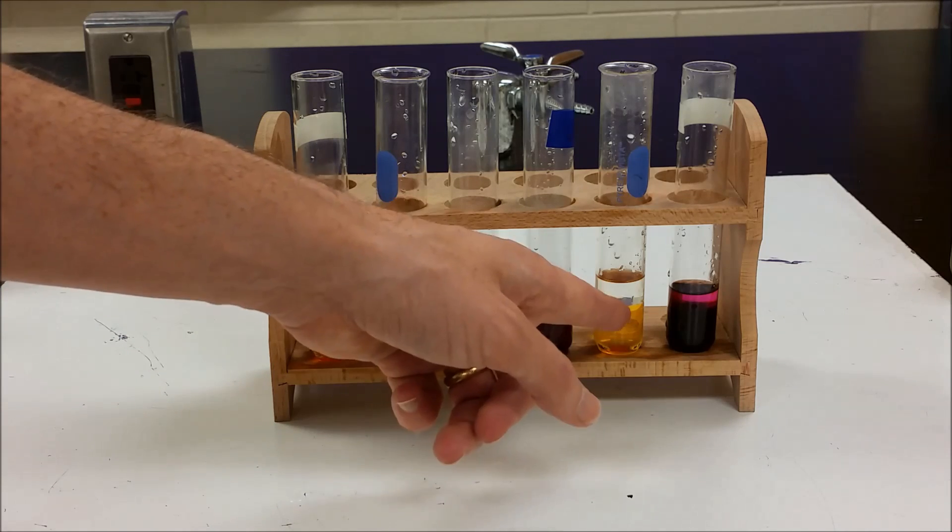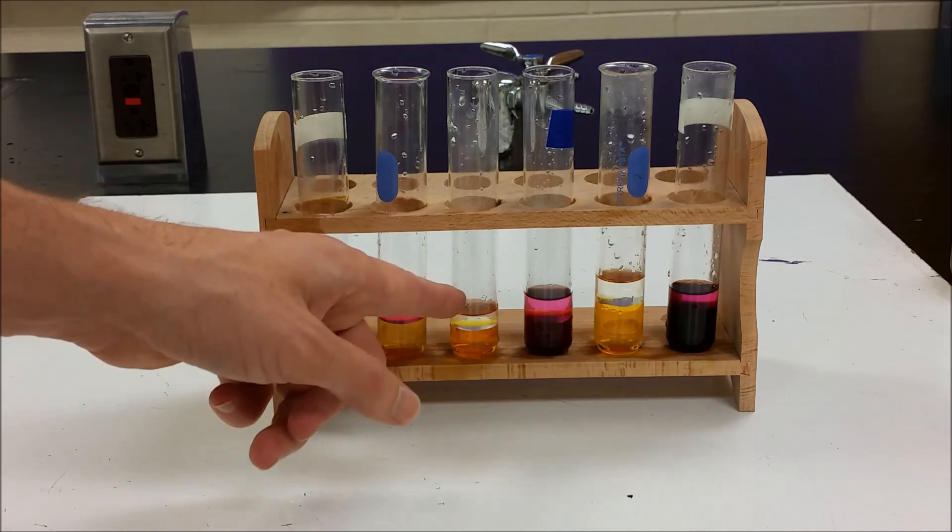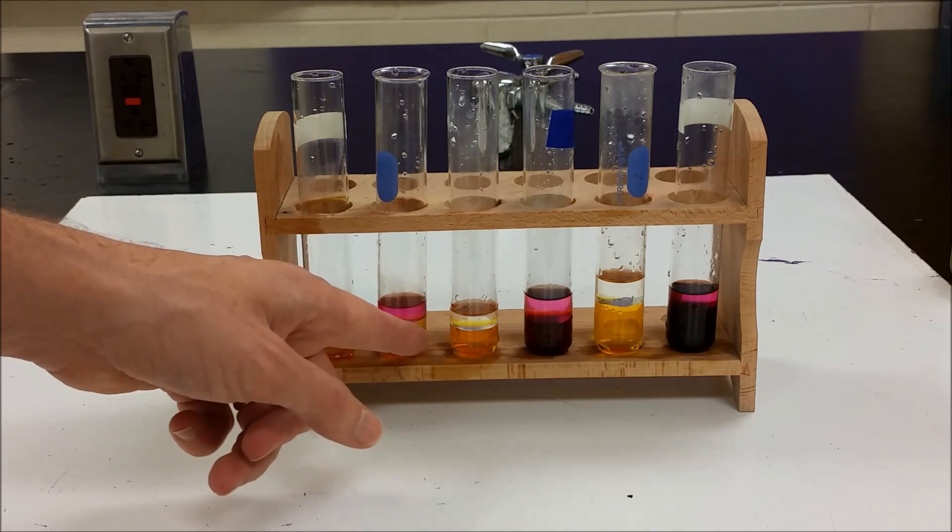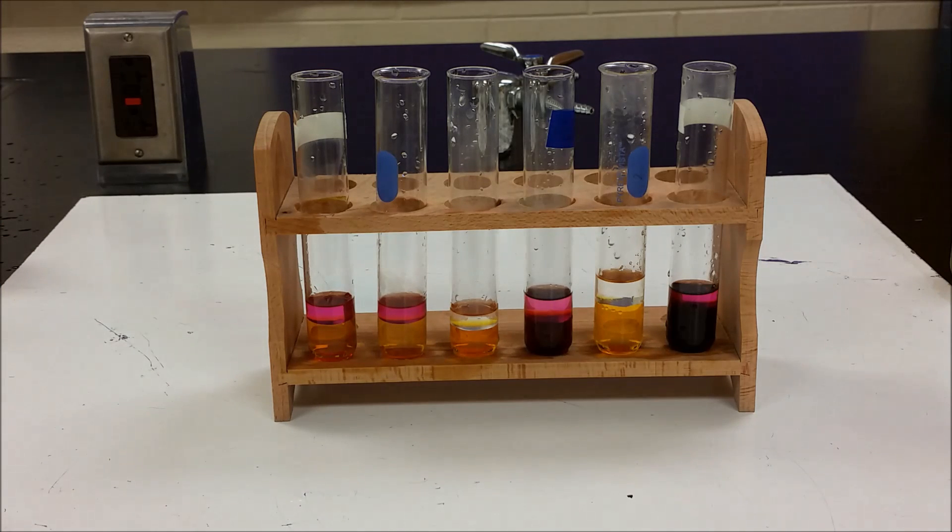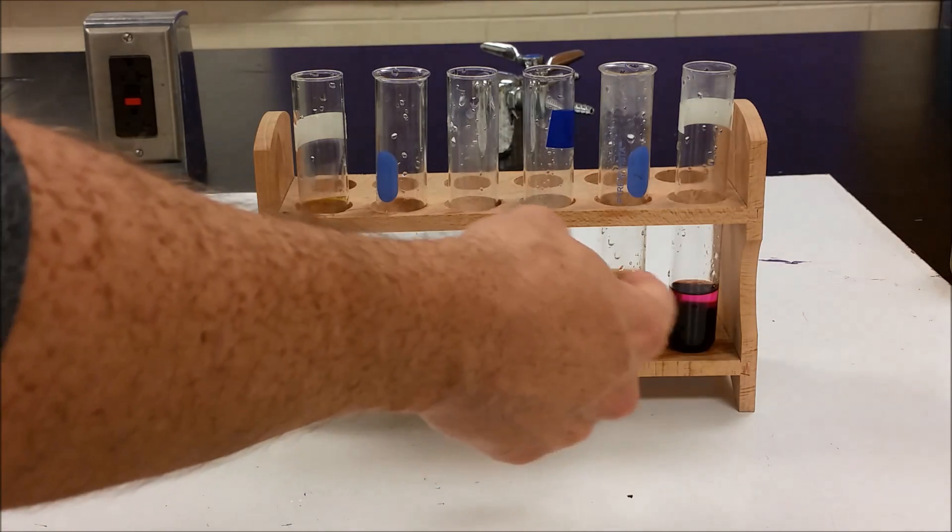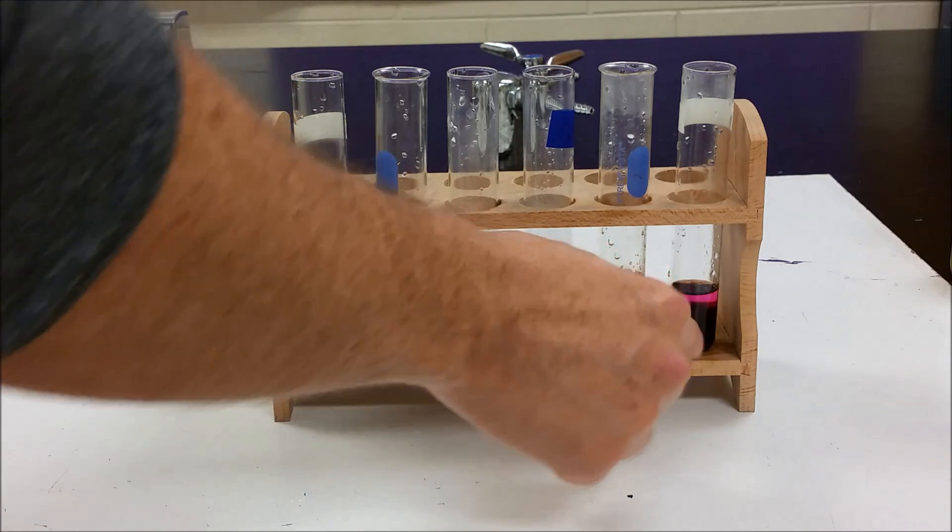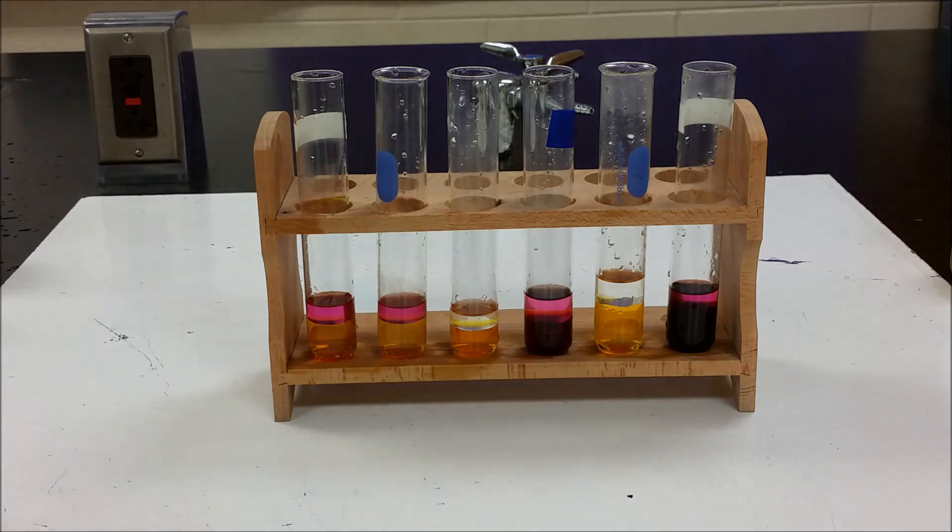So when we added bromide to chlorine, the bromide reacted to form bromine. But when we added bromine to iodide, nothing happened. And so we can generate an activity series from this. And we can also get into why is iodine less reactive than chlorine? Or alternatively, why is iodide more reactive than chloride or bromide?